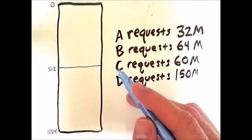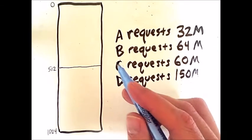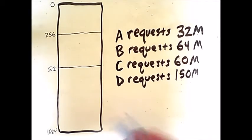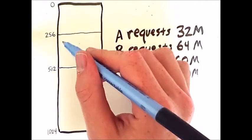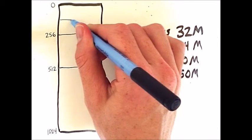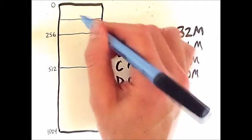512 is bigger than 32, and so is half of 512, 256. And if we continue this process, we will split 256 into two regions of 128 megabytes.